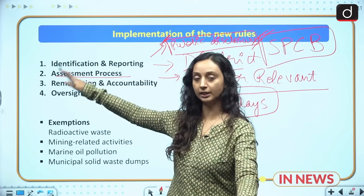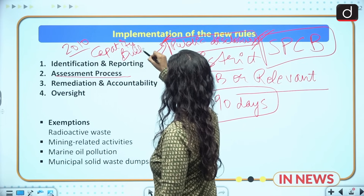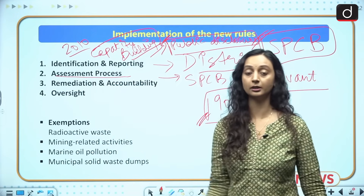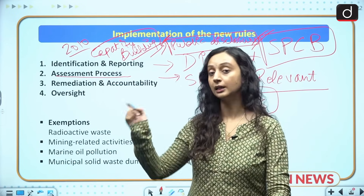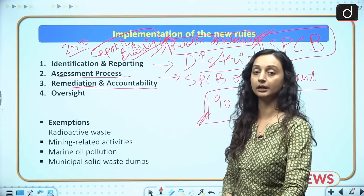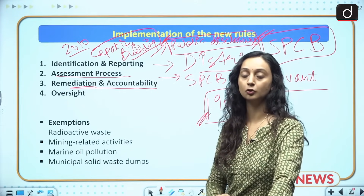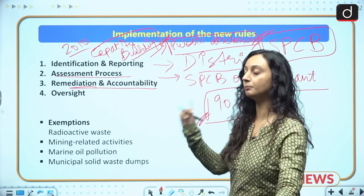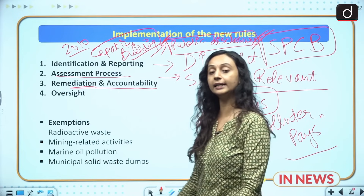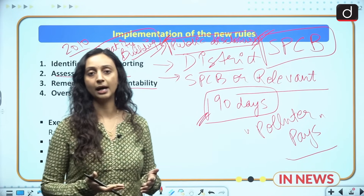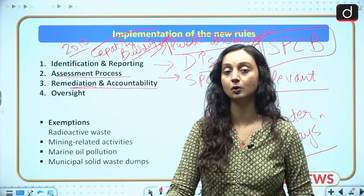The identification and assessment steps were already happening under the 2010 capacity building rules and the Environmental Protection Act of 1986, but there was no legal framework for remediation until 2025. The third step is remediation and fixing of accountability — who is responsible for the pollution and who will pay. The state pollution control board will identify the polluter, and the polluter pays principle will apply. If the polluter cannot be identified or has gone bankrupt, the centre and state will both pitch in with joint funds to remediate the contaminated site.